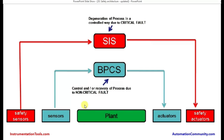This is a plant process having different sensors and different actuators. BPCS stands for basic process control system — it controls and recovers the process due to non-critical faults. During normal operation, the plant is under control by the BPCS. In case of any alarm — for example, if measuring 0 to 10 meters in a vessel and at 7.5 meters it gives a high alarm — that serves as a preventive measure in order not to exceed the level limit.